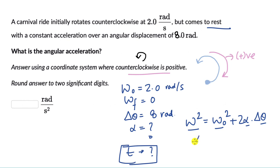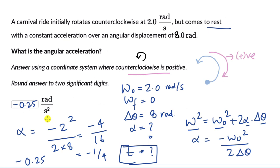So let's rearrange this. Alpha would be minus omega squared divided by two delta theta. And when you place the values this becomes minus 2 squared divided by 2 into 8. So this really becomes minus 4 divided by 16 or minus 1 by 4. And when we represent this in decimal form this becomes minus 0.25 radians per second squared.